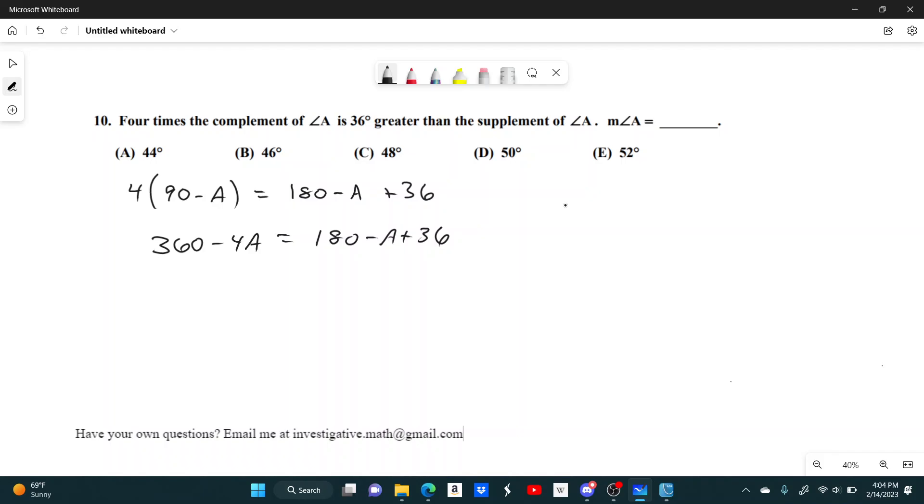So I'll get all the A's on one side and all my constants on the other. So I'll add 4A over here. So 360 equals 180 plus 3A plus 36.